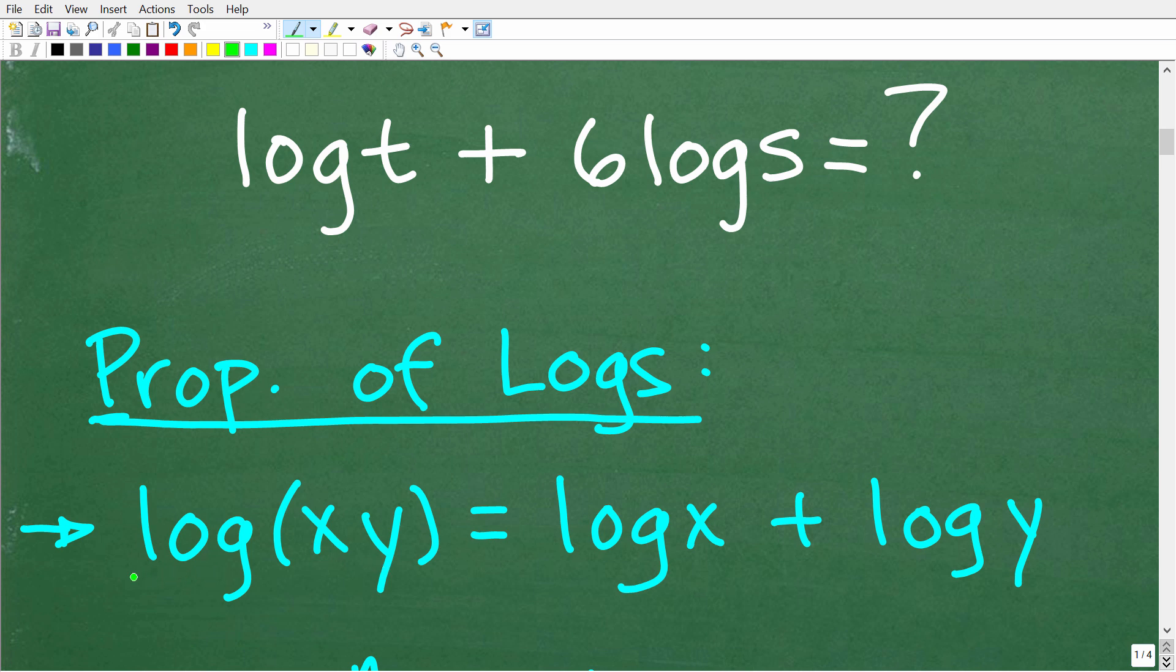So anytime you have the logarithm of a product like the logarithm of x times y, you can write that as log x plus log y. So going in this direction, you are expanding log xy, right? So if I told you to expand the expression log x times y, well, you would write this. But if I told you to condense the expression log x plus log y, you would write log xy.